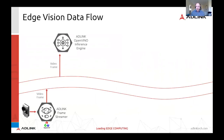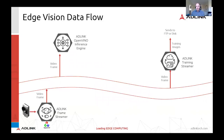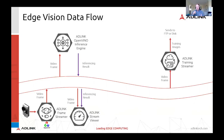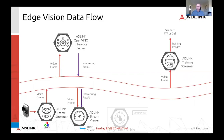The video frame can be used by the OpenVINO inference engine. It can also be used by our training streamer, which simply takes the video off the data river and FTPs or saves it to disk, or SFTPs it to cloud — wherever people need that data to be. Once we give the video frame to the OpenVINO engine, we produce an inference result. On its own it's just a set of coordinates based off a frame, so we created our stream viewer, which takes the video frame and the inference result, knits them together, and outputs an RTSP stream viewable by commercial RTSP viewers. For ease of use, we also added the capability to view an RTSP stream within our Edge Profile Builder without leaving that ecosystem.